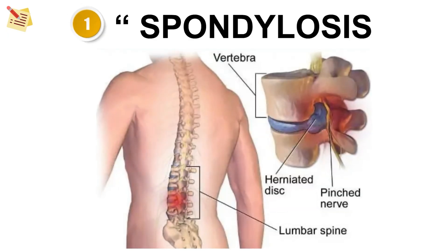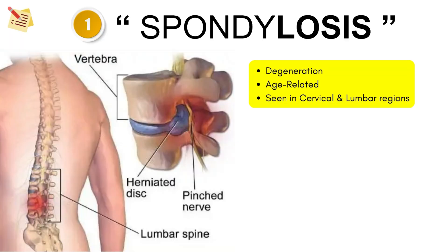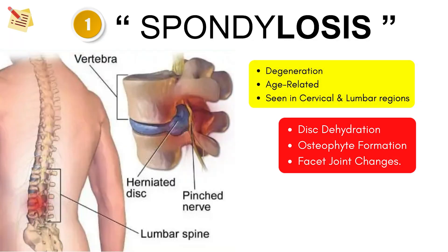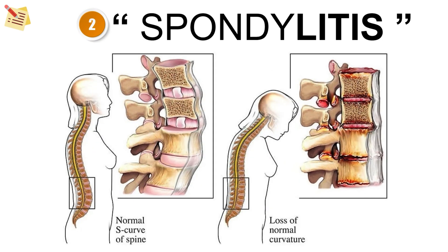First is spondylosis. This is essentially spinal degeneration, often age-related. Think of it like osteoarthritis — there is cartilage deformation and deformities, and the same happens with the spine. It is commonly seen in the cervical and lumbar regions. It involves disc dehydration, osteophyte formation, and facet joint changes. Key symptoms in this condition are neck or back pain, stiffness, and limited mobility.